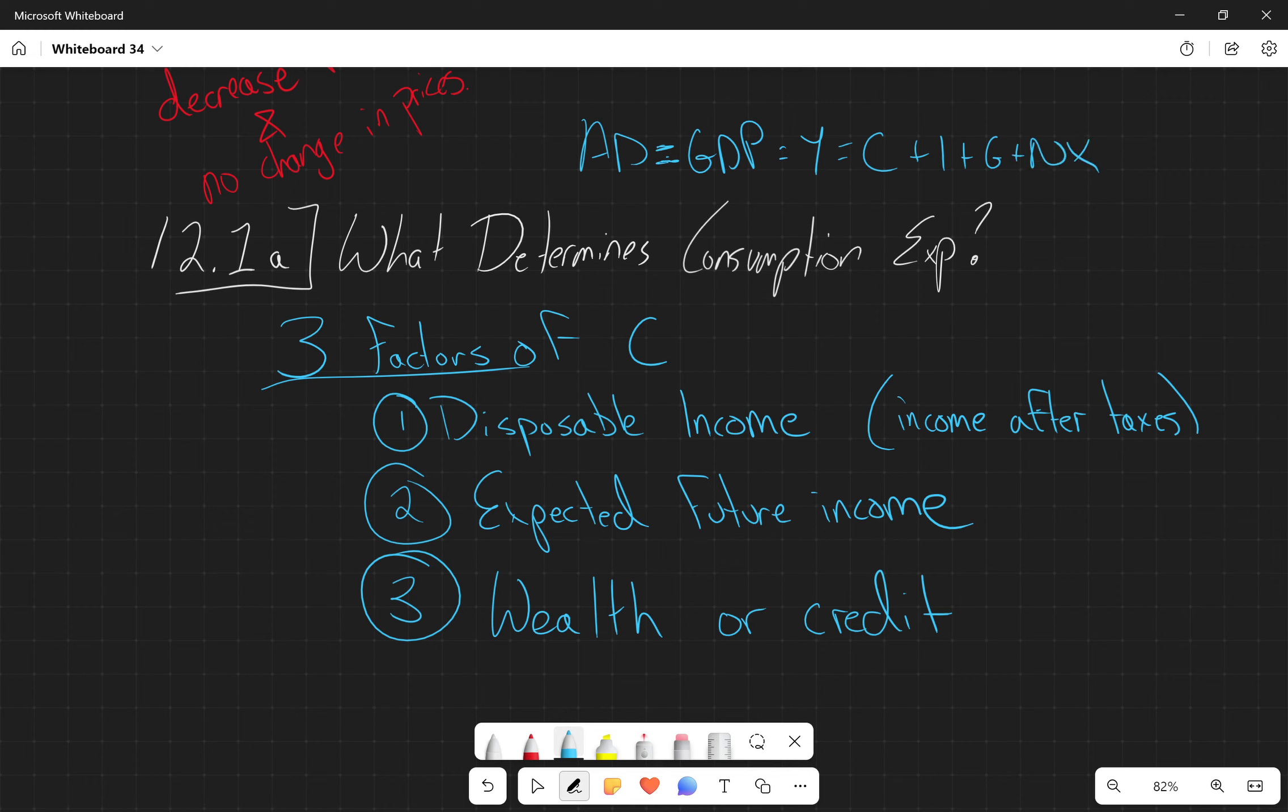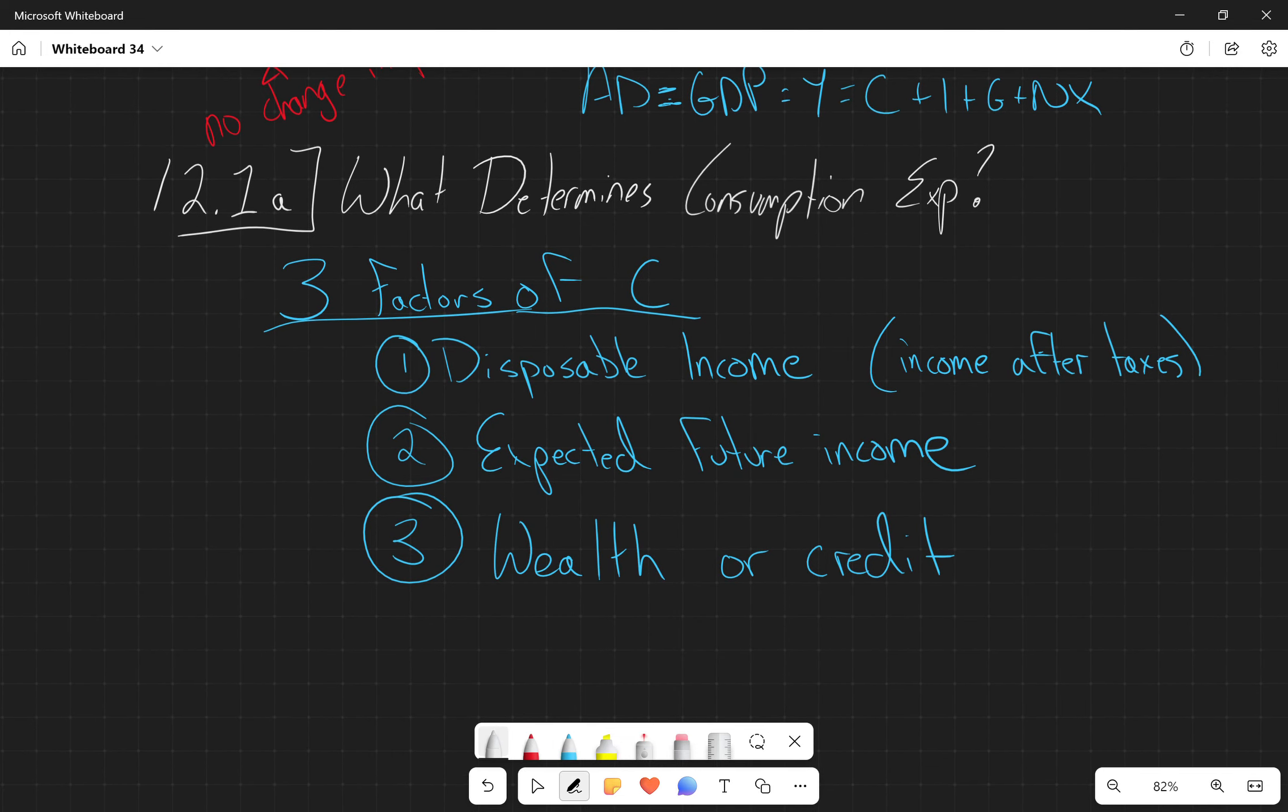So really any kind of aggregate demand stimulation could be from any one of these elements. So these are the three factors of C, what are going to be some of our factors of investment.